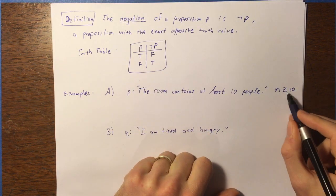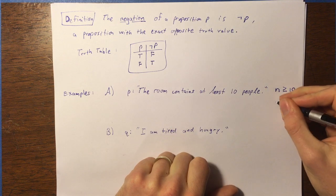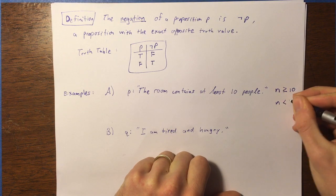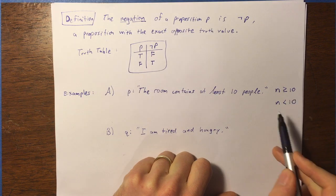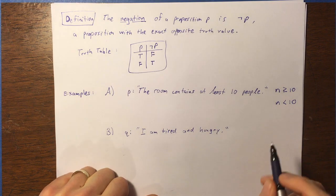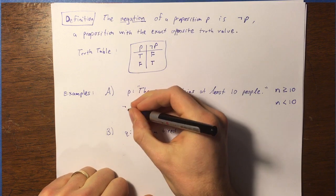So the exact opposite of n greater than or equal to 10 is going to be n strictly less than 10. So one of them is greater than or equal and the other is strictly less, right? That's how you would negate this.